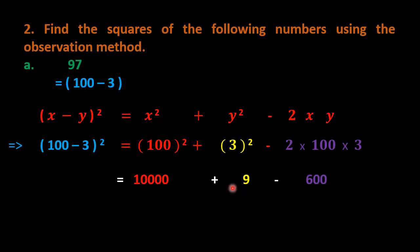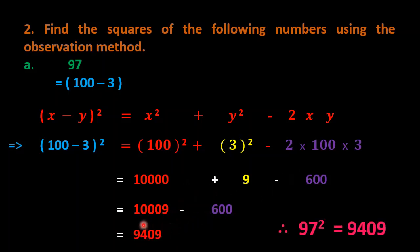The two positive terms are 10000 and 9, and the negative term is 600. Following BODMAS, we add first: 10000 + 9 = 10009, then subtract 600 to get 9409. Therefore, 97² = 9409.